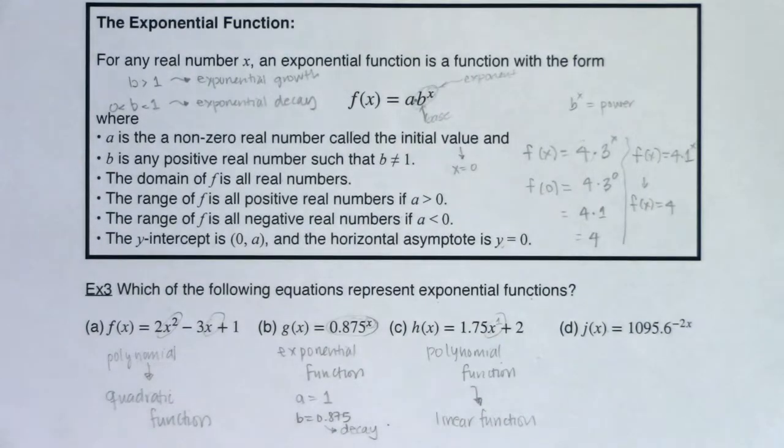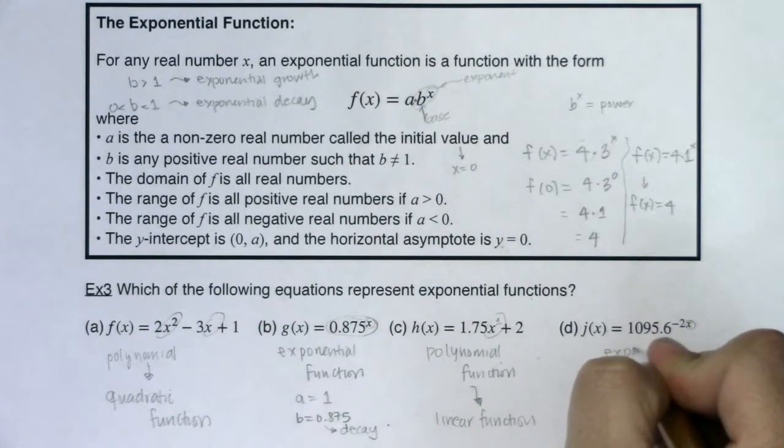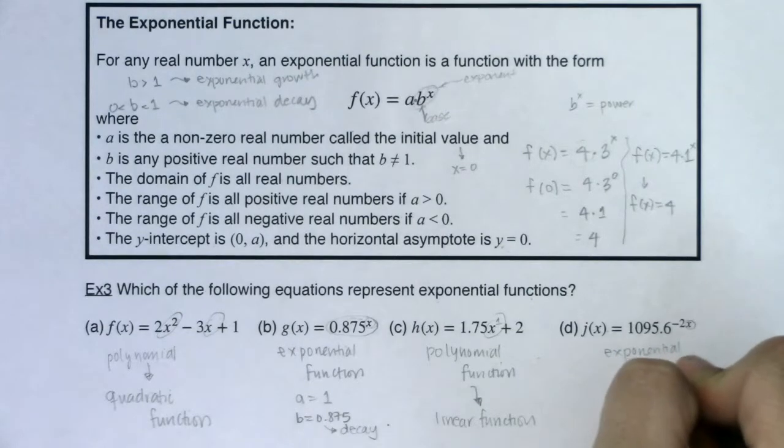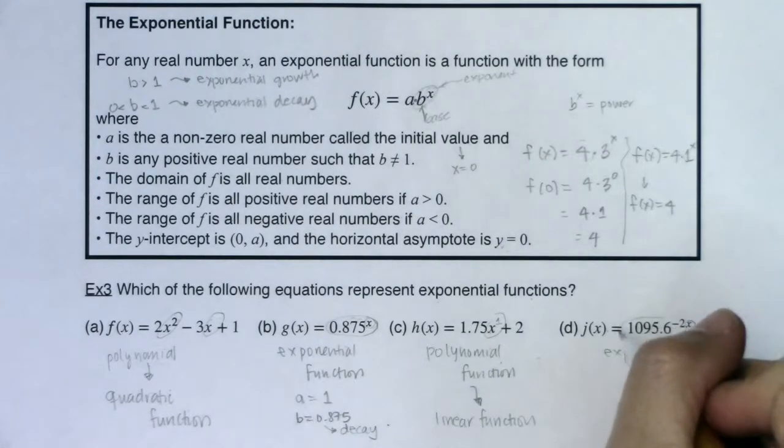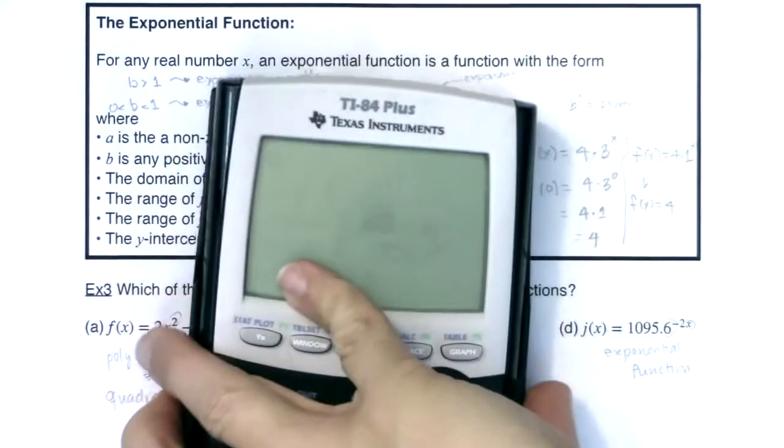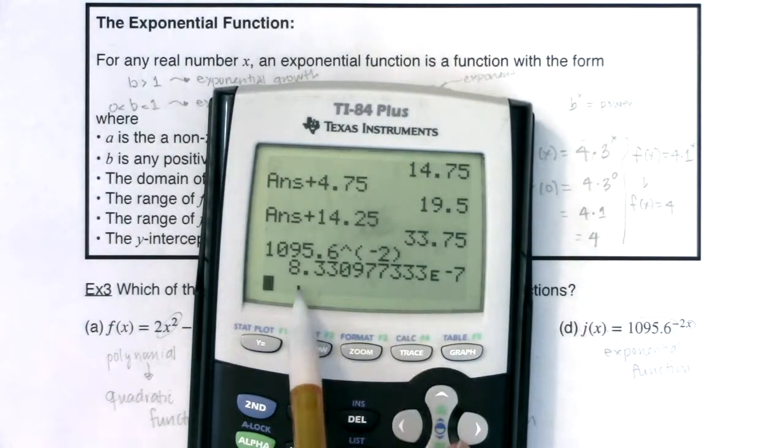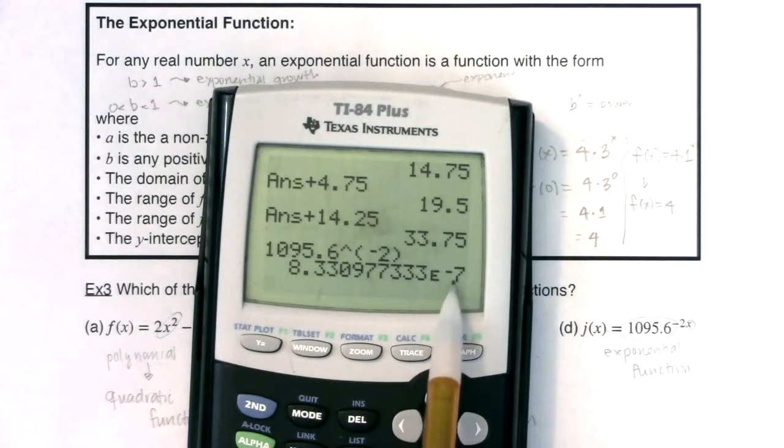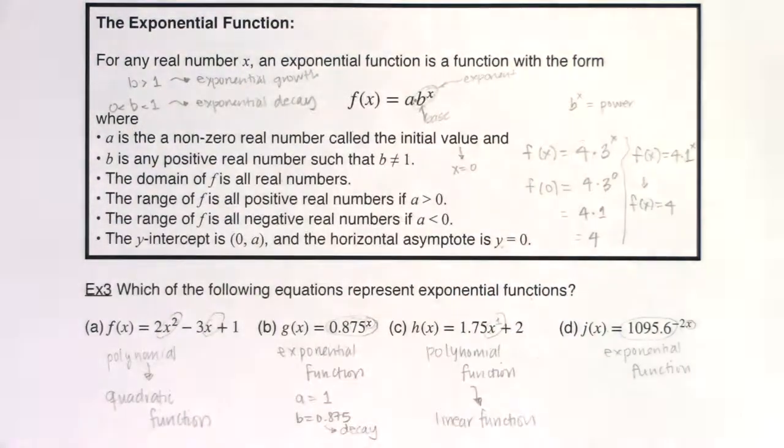Let's take a look at this function here. So I've got 1095.6 raised to the negative 2x. And I see my variable up here in my exponent. So this is an exponential function. And you might be thinking to yourself, well this is also exponential growth, because you see your base looks to be a number larger than 1. But we have this negative exponent here, and that is going to affect what we do. So if you think about this number, I'm going to bring my calculator over here. I want us to think about 1095.6 raised to the negative 2 power.